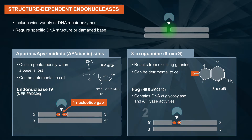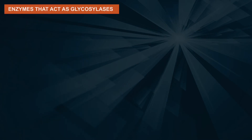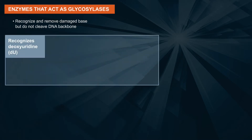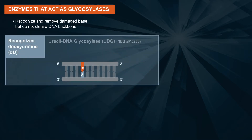The AP lyase activity of FPG cleaves an AP site via beta and delta elimination, creating a one-nucleotide DNA gap with 5' and 3' phosphate termini. Some enzymes act only as glycosylases — that is, they only recognize and remove the damaged base but do not specifically cleave the DNA backbone.